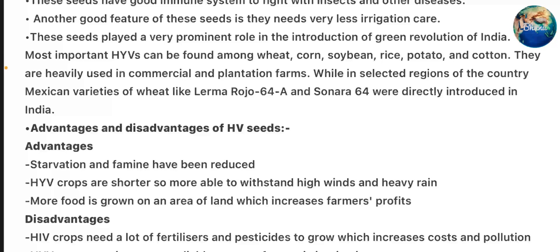While in selective regions of the country, maximum varieties of wheat like Lerma Rojo 64A and Sonara 64 were directly introduced in India.